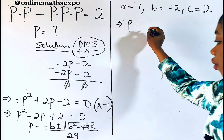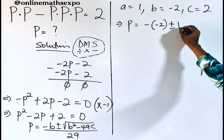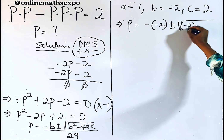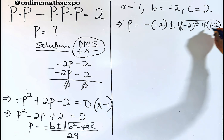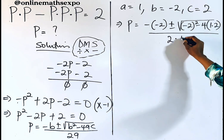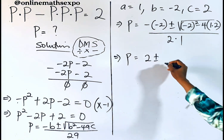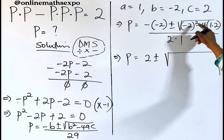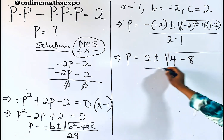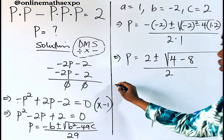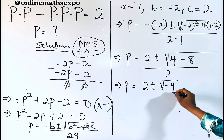Plugging in: p = (−(−2) ± √((−2)² − 4·1·2)) / (2·1) = (2 ± √(4 − 8)) / 2 = (2 ± √(−4)) / 2.